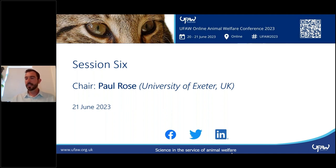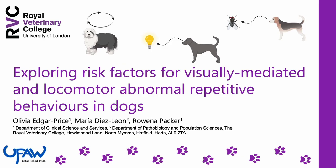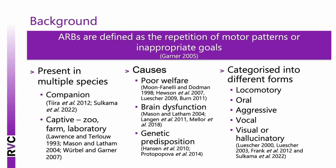The next talk in today's agenda is from Olivia Edgar-Price, who will be talking about risk factors for visually mediated locomotor ARBs in dogs. Hi, I'm Olivia. Today I'll be talking about my MRes project exploring the risk factors for visually mediated and locomotor abnormal repetitive behaviours (ARBs) in dogs. ARBs are defined as the repetition of motor patterns that lack an apparent goal or function — called stereotypies — and the repetition of seeking an inappropriate goal, called compulsions. ARBs are present in multiple species but are mainly studied in captive animals such as zoo, farm, or lab animals, with less research in companion animals.